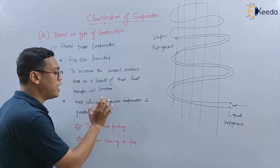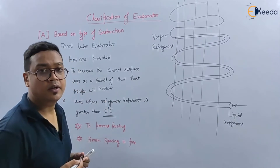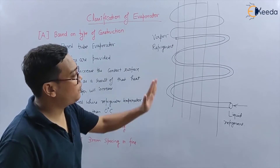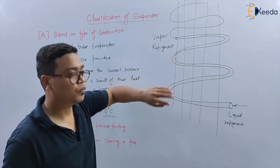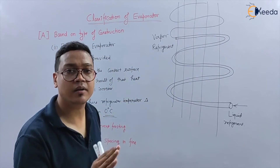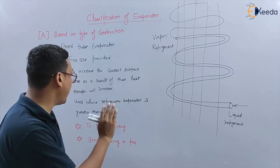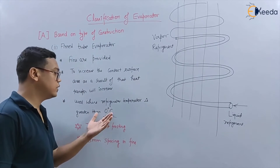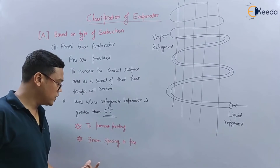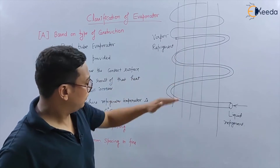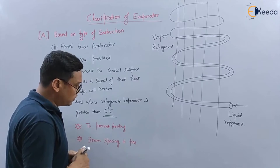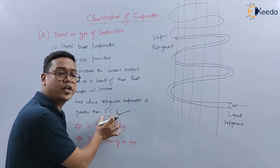The fin tube evaporator is used where the temperature requirement is greater than 0°C. If the temperature is less than 0°C, frosting will occur in the evaporator — ice will accumulate between the fins, blocking airflow. To prevent frosting, fin spacing is kept larger. That is why these evaporators are used where the temperature requirement is greater than 0°C.